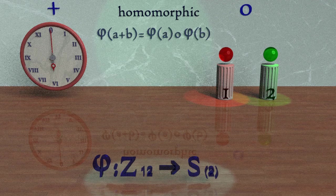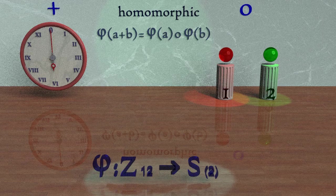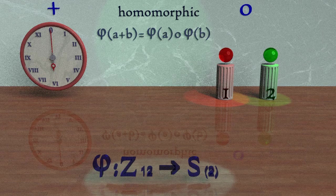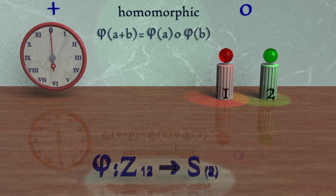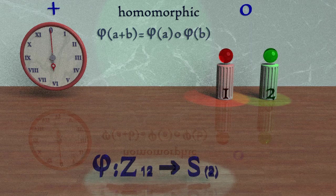Remember, on the left we perform the operation in the group first, which is addition, and on the right we would perform the operation in the second group, which is the composition of functions. If these two are equal, then the groups are homomorphic.